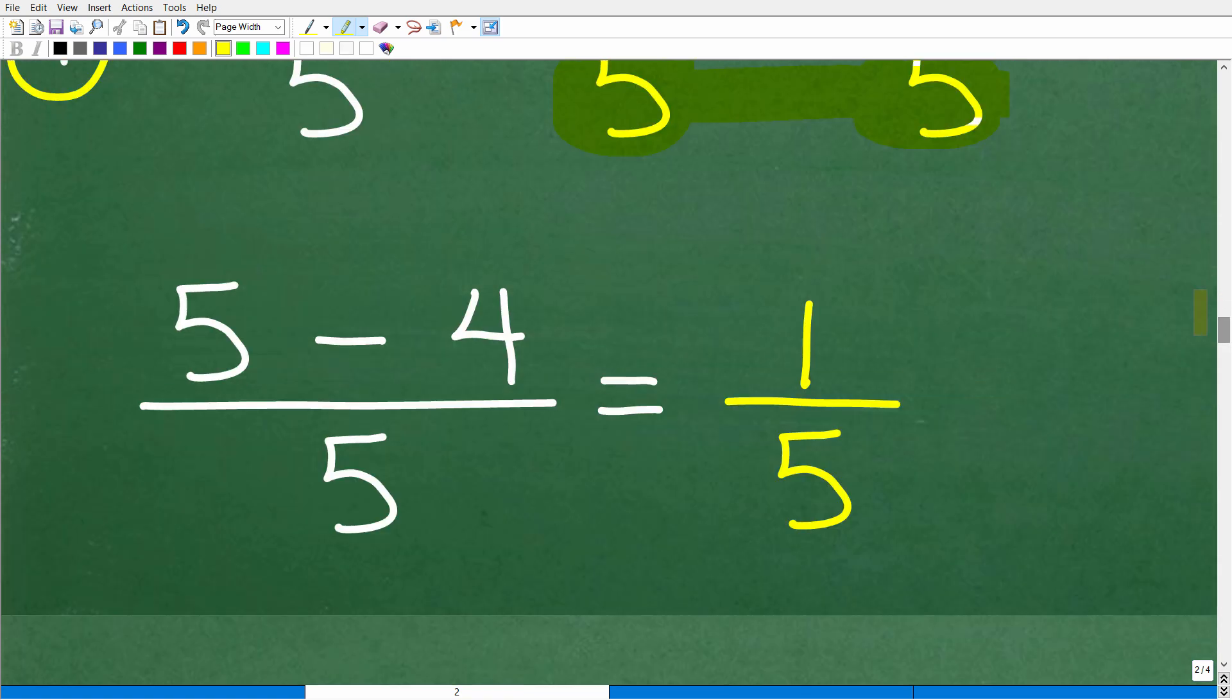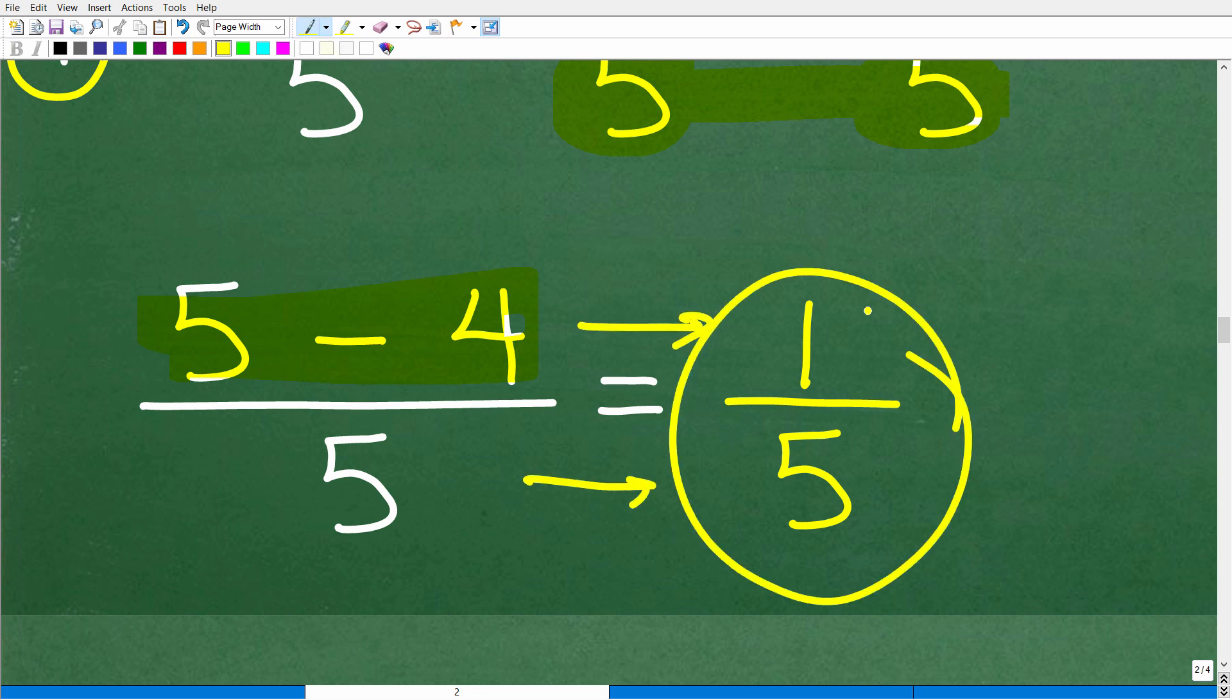So, 1 minus 4 fifths is the same thing as 5 over 5 minus 4 over 5. And now we can subtract these fractions because we have the same denominators. Okay. So, what do we do? Well, we're simply going to subtract the numerators. So, we have 5 minus 4, which, of course, is 1 over 5 or 1 fifth.